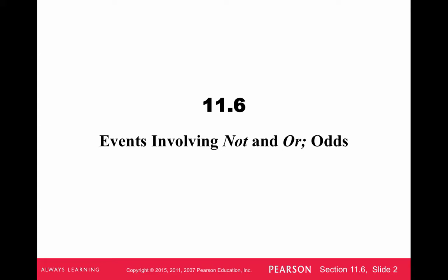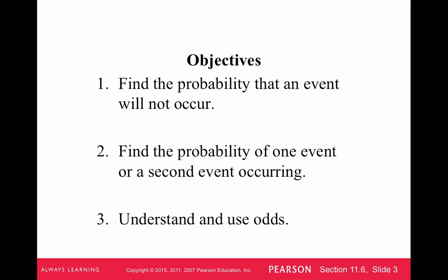So we're going to look at events involving not, and events involving or, and then some odds problems. To find the probability that an event will not occur, find the probability of a second event occurring, and then understand odds.